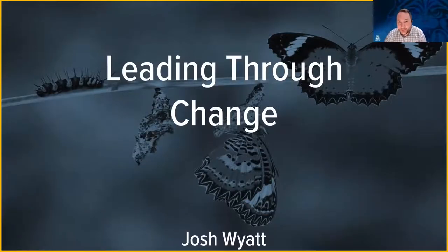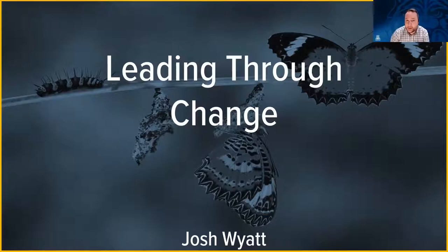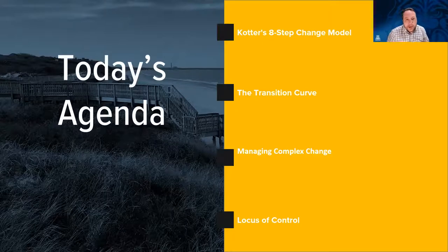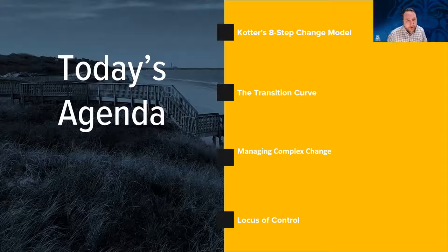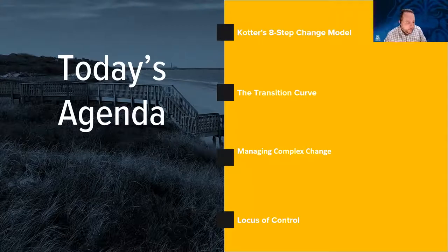Today we're going to talk about how do you lead through change, because change is something that is consistent and constant — whether it's large or small, helping others navigate, helping ourselves navigate, and recognizing where we are within that change continuum. We're going to look at Kotter's eight-step change model, the transition curve, how to manage complex change, how to identify components we're missing as we navigate change, and finally how our own locus of control impacts us as individuals.